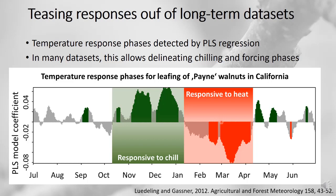Combining this with our biological understanding of dormancy, we interpret the green period as the chill accumulation phase — when it's warm, we have slower accumulation of chill, which translates into a late bloom date. The red period is when chill no longer matters and the trees are responsive to heat, meaning that the warmer it is, the more rapidly heat accumulates and the earlier the bloom date occurs.